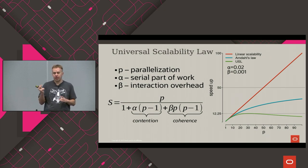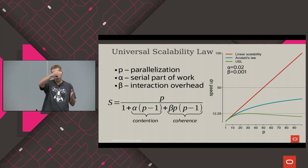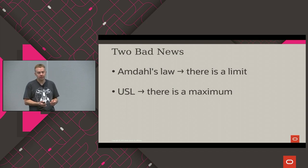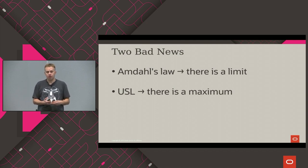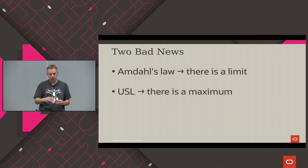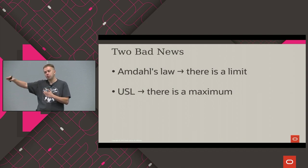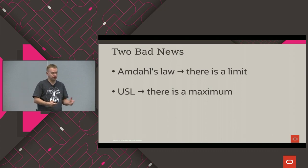The Universal Scalability Law is even applied for capacity planning: people perform measurements with different parallelization levels and extrapolate to understand future scaling. There are two consequences: Amdahl's law says there is always a limit you can never reach, and the Universal Scalability Law tells us there is a maximum — scaling beyond that maximum will actually slow down your performance. Sometimes it makes sense to stop at the optimal point and not go further.